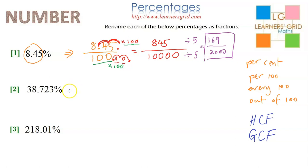Again, let's start the same way. It's going to be over 100 to start with, because that's the percent bit. Then I take the 38.723. The shortcut way to explain this is I'm going to move the decimal point to the right until 38.723 is a whole number. So 1, 2, 3.